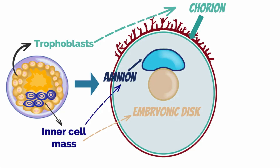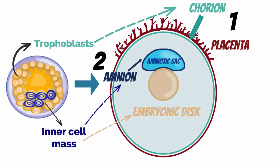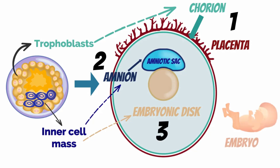The blastocyst with surrounding trophoblasts grows and expands. Even before implantation, the trophoblasts differentiate and form the chorion, which gives rise to the placenta. Following implantation, the amnion is developed, which gives rise to the amniotic sac. Last to differentiate is the embryonic disc, which gives rise to the embryo.